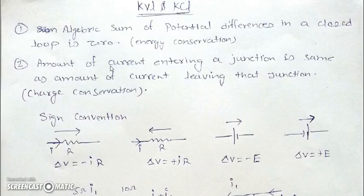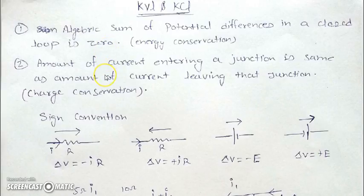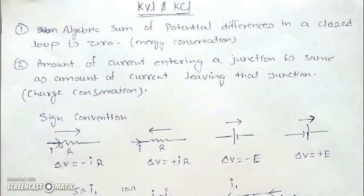KCL states that the amount of current entering a junction must be equal to the amount of current leaving that junction. This is a consequence of charge conservation. These are the two basic laws we will follow to solve any circuit. Now let's look at the sign convention.